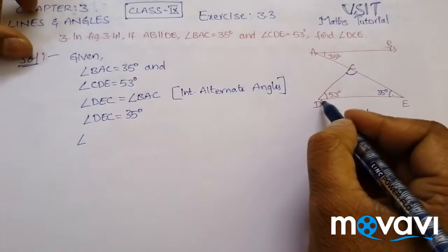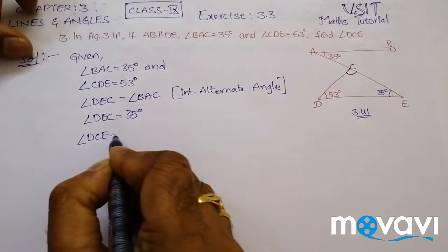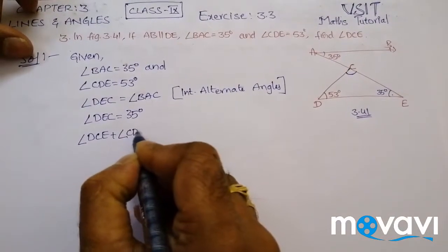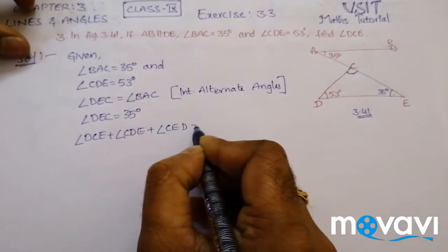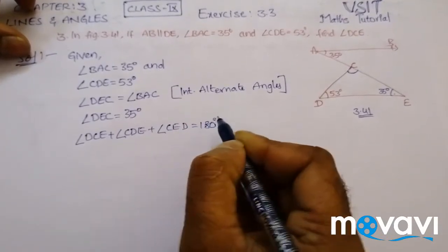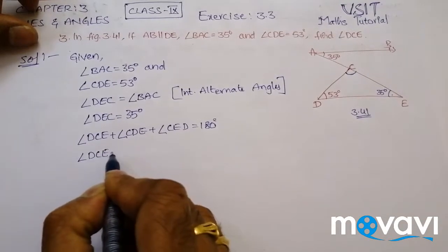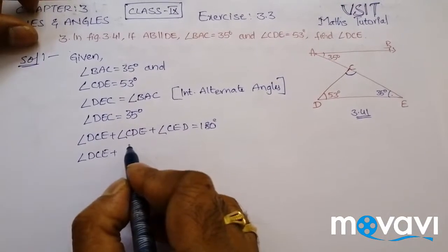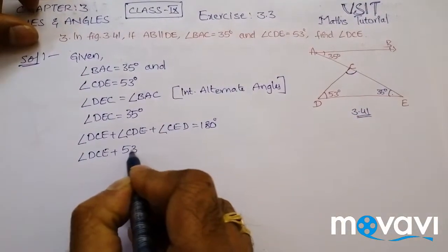So what I can write here: angle DCE plus angle CDE plus angle DEC is equal to 180 degrees. Now DCE we don't know. Let this be as it is. And angle CDE is 53 degrees.